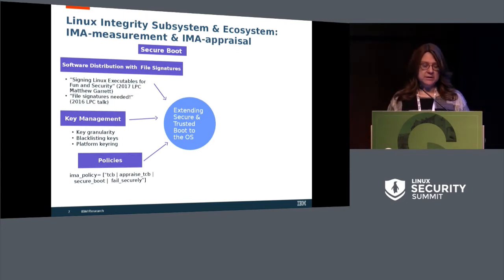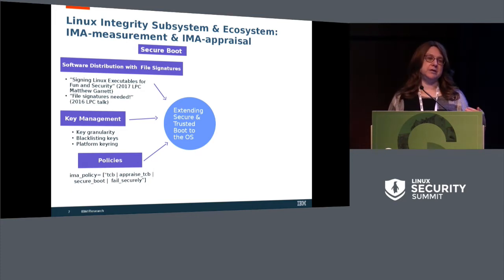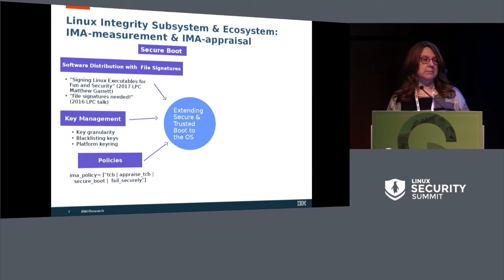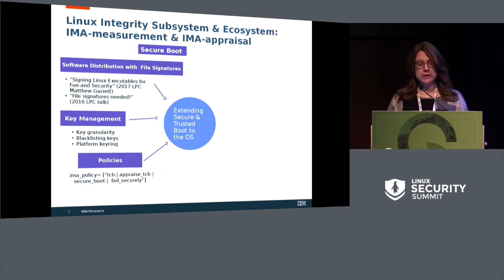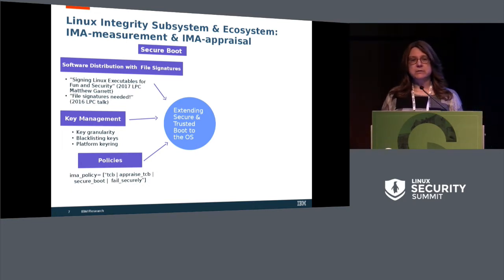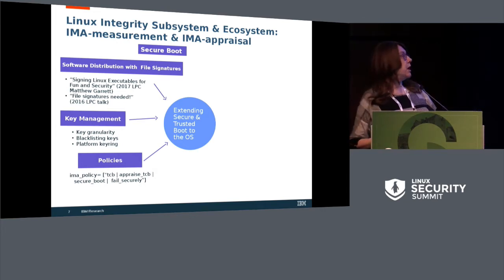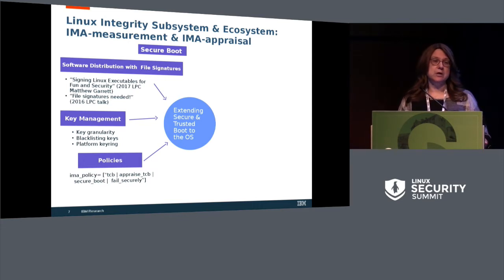This diagram shows what is entailed in order to verify signatures — this is the appraisal, the equivalent of extending secure boot to the OS. In order to verify signatures, we need those signatures. There have been two talks in the past: the first given by Stefan Berger and Mehmet Kaleb in 2016 at LPC, and last year Matthew Garrett gave a talk on signing Linux executables for funding security, also at LPC. The main idea is that we need to be able to distribute file code and file signatures together. To do that, we've modified RPM, which has been upstream for a number of years.